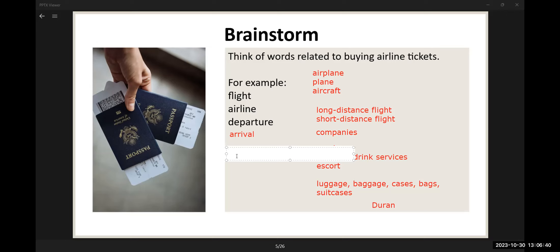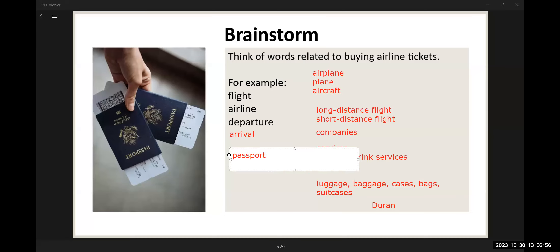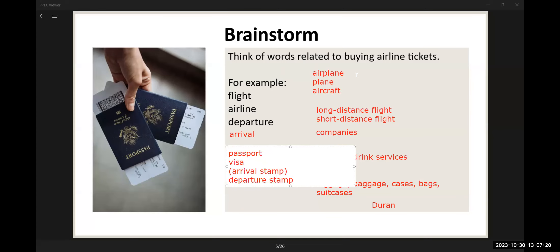Luggage — you can say luggage, baggage, cases, bags, or suitcases. They are all interchangeable; you can use them in the same ways. And for your passport — in the picture we can see a passport. You might need a visa, an arrival stamp, a departure stamp, and so on. Now that we've got the logistics of airline tickets, let's continue.